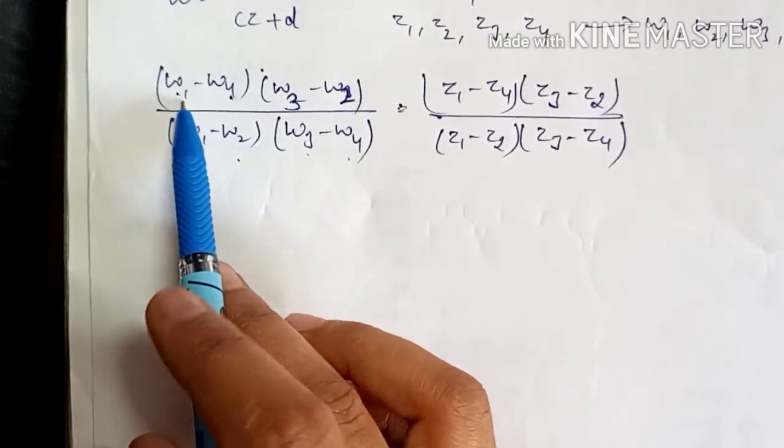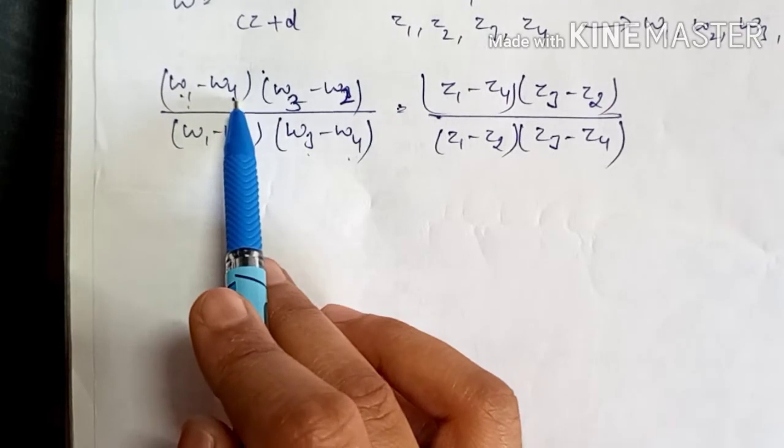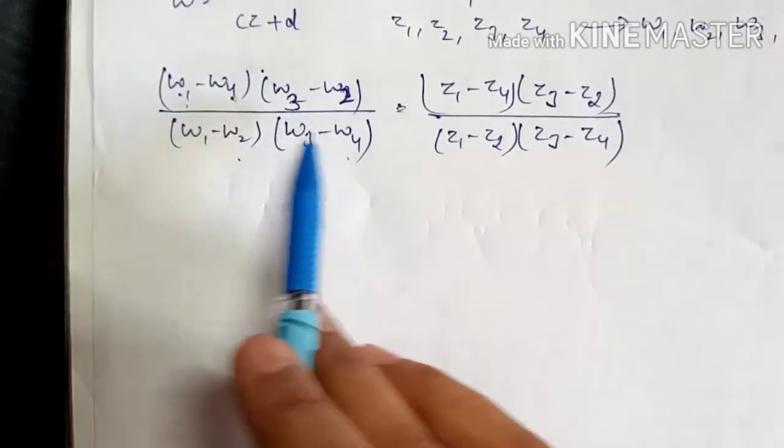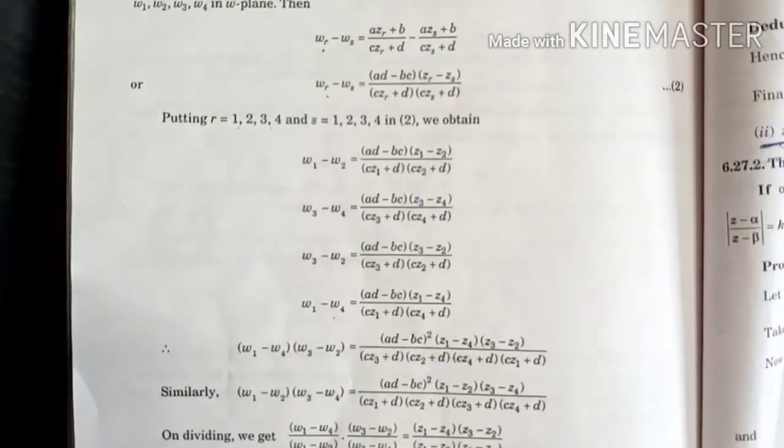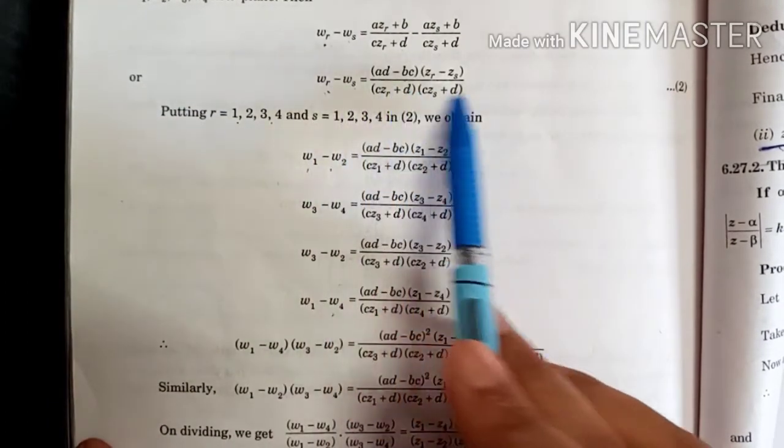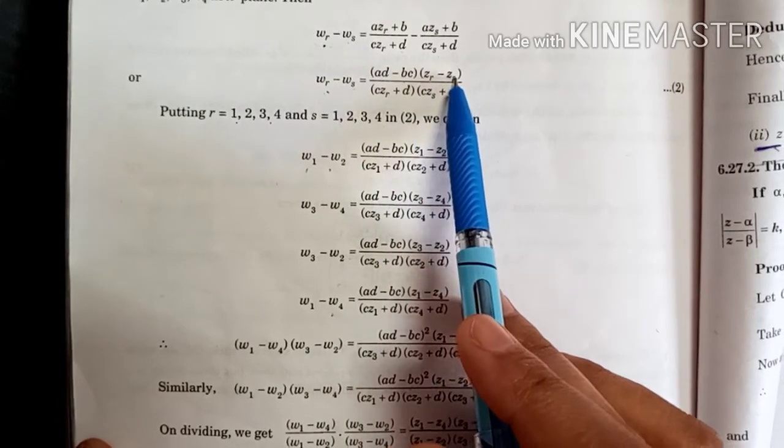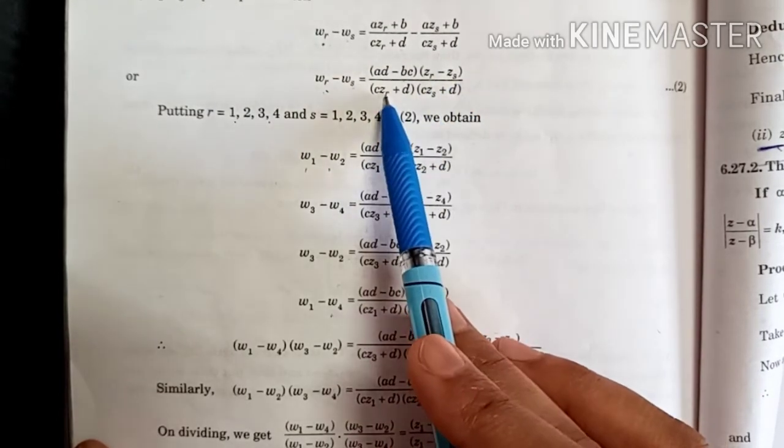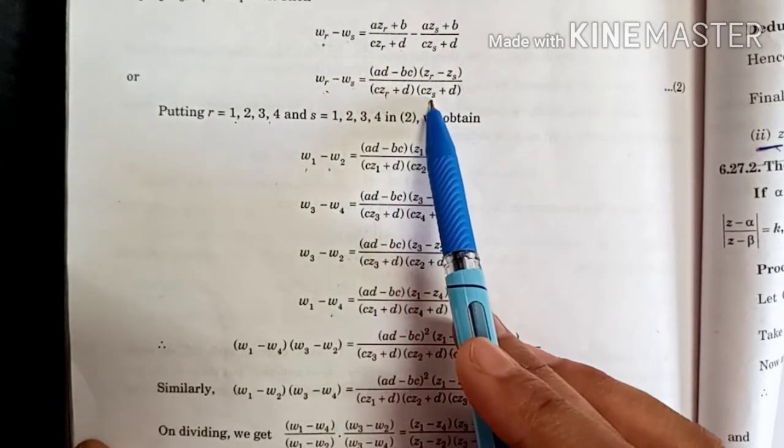That means R values first we will put one, S put four: 1, 4, 3, 2, 1, 2, and 3, 4. In this order we will put. So W1 minus W2 will come here. R we put 1 and S we put 2. So Z1 minus Z2, below CZ3, and CZ2.